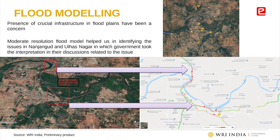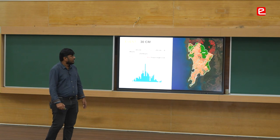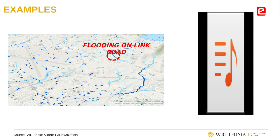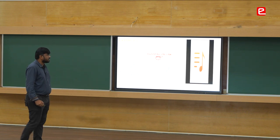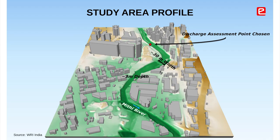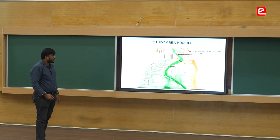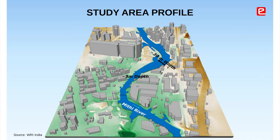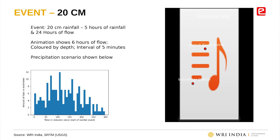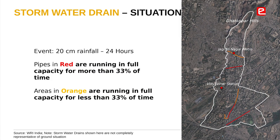Flood modeling — you have the equations, you have the elevation model, you start modeling. This is a flow animation we did for Mumbai — a 30-centimeter rainfall event showing all the prominent flood-prone areas for different scenarios. On Link Road we predicted flooding and there was crowdsourced video confirming it — the Mumbai corporation appreciated our effort. Using topography and building data, we figure out how much water will flow in different scenarios. The next topic is stormwater.